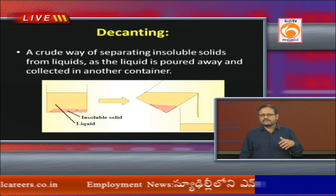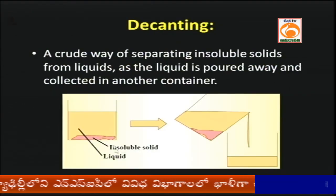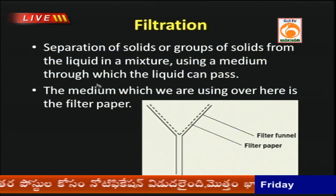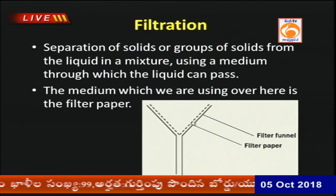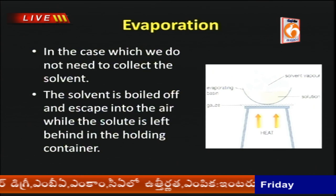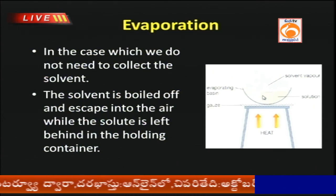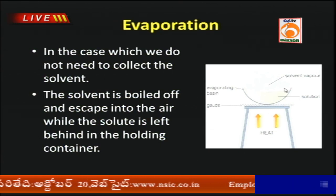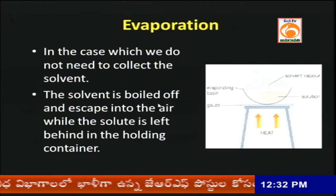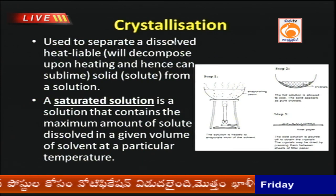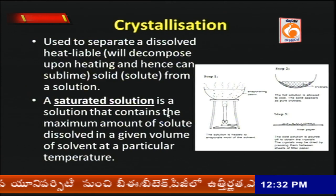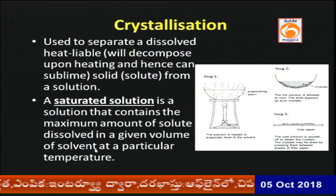The decanting method is used when there is an insoluble solid and a liquid. In filtration, a suitable filter paper whose pores are smaller than the solid particles is used. In evaporation, a solution is heated so that unwanted substances are removed and the pure substance is separated. In crystallization, a saturated solution — containing the maximum amount of solute dissolved in a given volume of solvent at a particular temperature — is used.